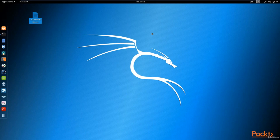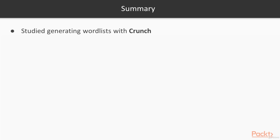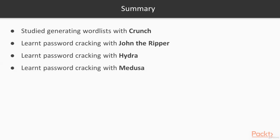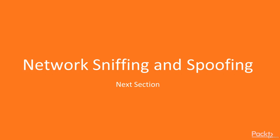That is going to be a wrap for section six, where we looked at password cracking. We looked at how to generate custom word lists with Crunch, the default directory for word lists in Kali Linux, password cracking with John the Ripper for Linux passwords and archive/encrypted file passwords, password cracking with Hydra on Metasploitable 2's SSH login, and finally password cracking with Medusa using a custom word list. In the next section, we'll be looking at network sniffing and spoofing.